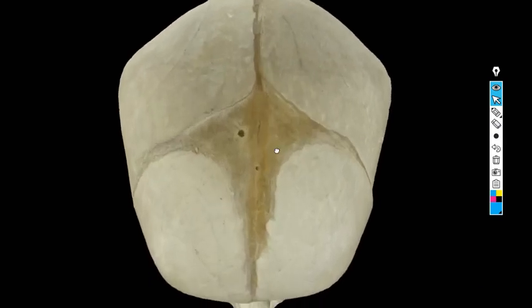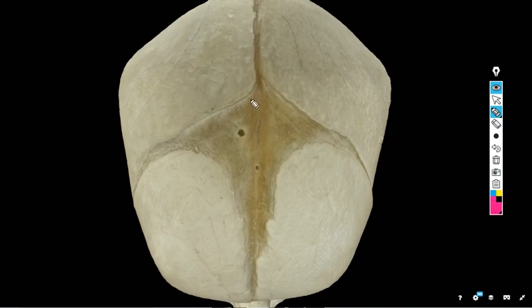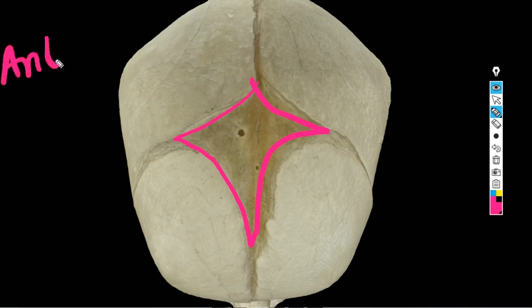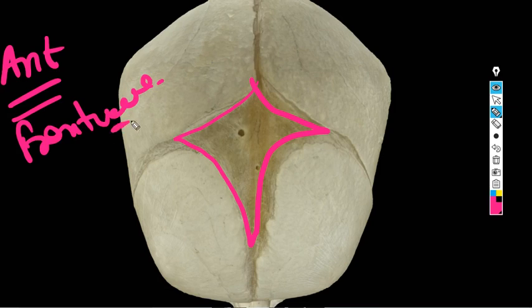My friends, anteriorly you can see this broad rhomboid shape fontanelle. This is the anterior fontanelle. This is rhomboid shape anterior fontanelle. Now it is made by four sutures, junction of the four sutures: sagittal suture, frontal suture, and two coronal sutures. The diameter is approximately three by three centimeters.